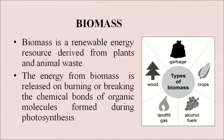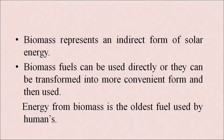Biomass is a renewable energy resource derived from plants and animal waste. The energy from biomass is released on burning or breaking the chemical bonds of organic molecules formed during photosynthesis. As you can see in the diagram on the right hand side, the different types of biomass are shown. Biomass represents an indirect form of solar energy, and biomass fuels can be used directly or transformed into a more convenient form. Energy from biomass is the oldest fuel used by humans.